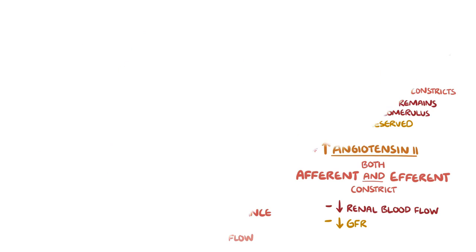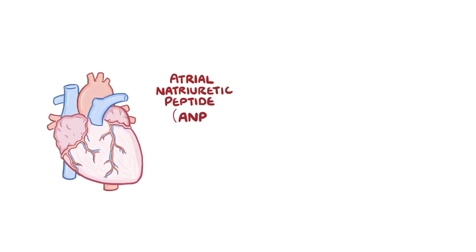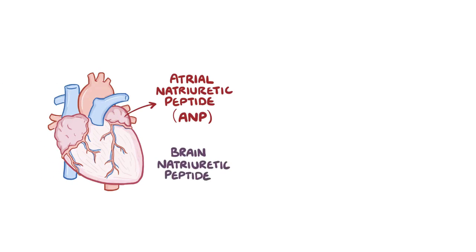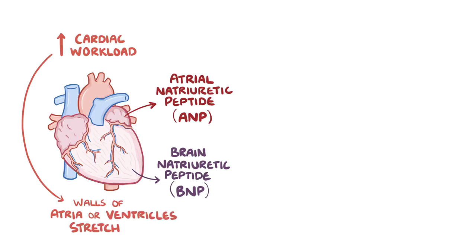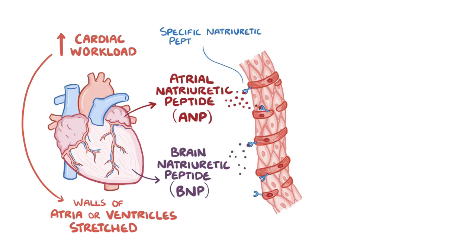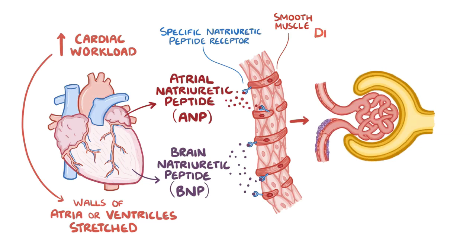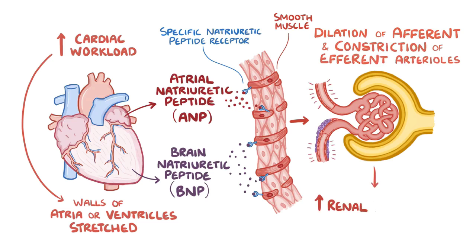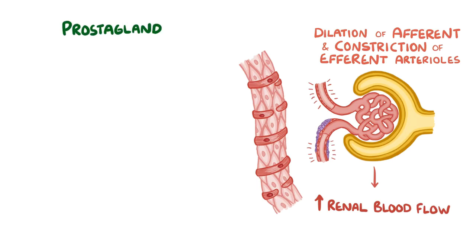Other hormones decrease arteriolar resistance and increase renal blood flow. First, there's atrial natriuretic peptide (ANP), secreted by the atria of the heart, and brain natriuretic peptide (BNP), secreted by the ventricles — named after the brain only because it was first discovered in pig brain extracts. Both ANP and BNP are secreted when there's increased cardiac workload and the walls of the atria or ventricles get stretched. They bind to natriuretic peptide receptors on smooth muscle cells, resulting in dilation of afferent arterioles and constriction of efferent arterioles, increasing renal blood flow.